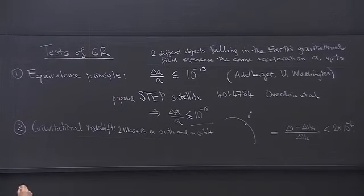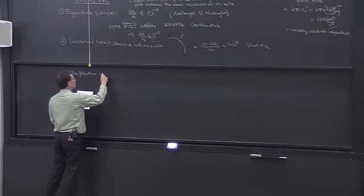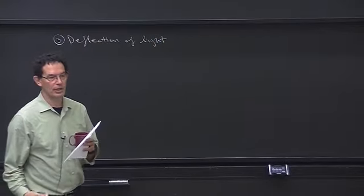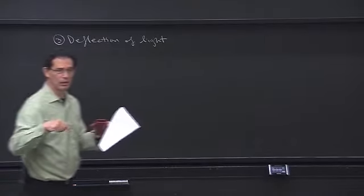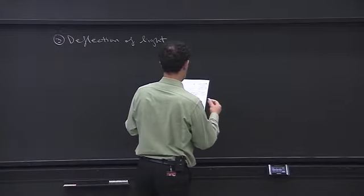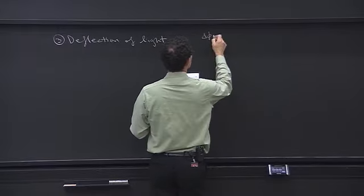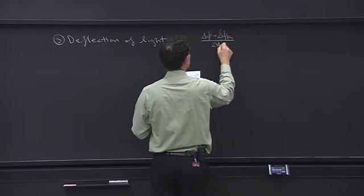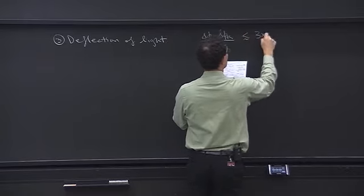Then we have deflection of light — one of the first experimental tests of general relativity, and it's on the homework. That test now has an accuracy: (deflection angle − theoretical prediction) / theoretical prediction is less than 3×10⁻³.